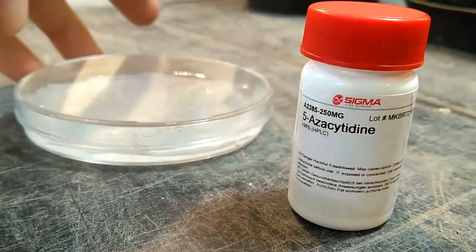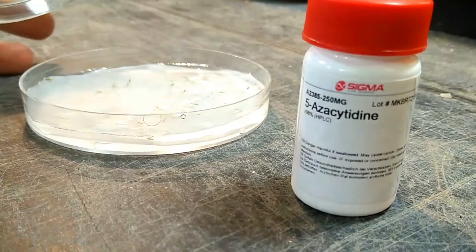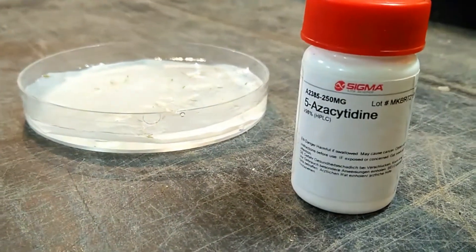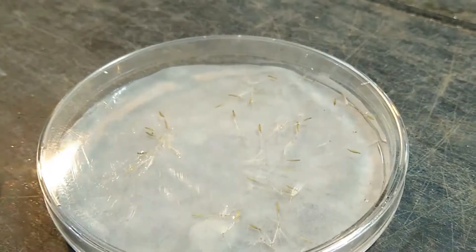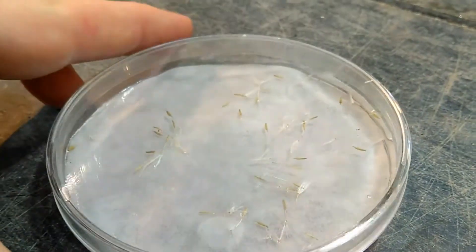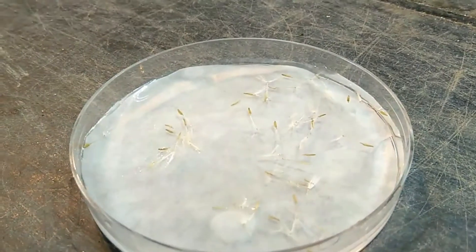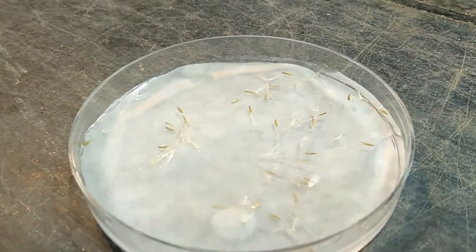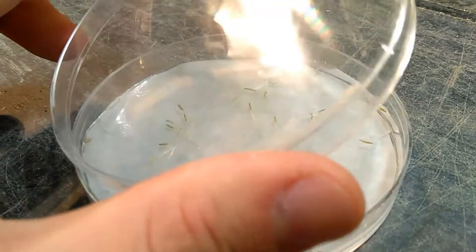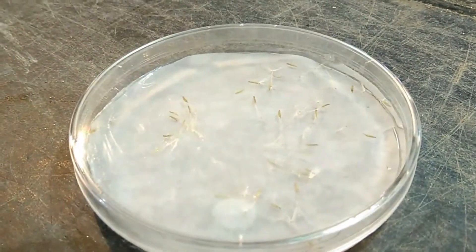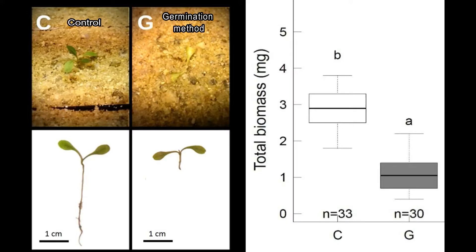Traditionally, plants are demethylated during germination. Seeds are put directly into an azacitidine solution until they germinate. However, this approach usually causes unwanted effects, such as underdeveloped root systems and high mortality of treated plants, making it really difficult to do a full comparison with untreated plants.